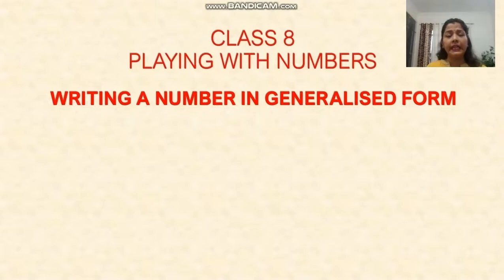Now we will see writing a number in a generalized form. There are two questions here. These are special types of questions. You might have studied them in linear equations in one variable, but I have discussed them here separately. If any number has two digits, like a and b, where a is in the tens place and b is in the units place.